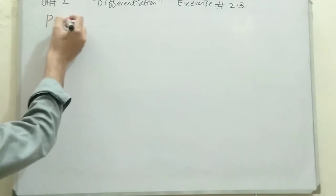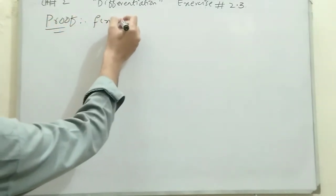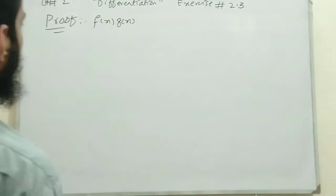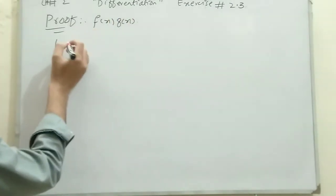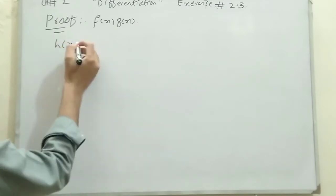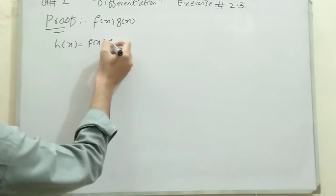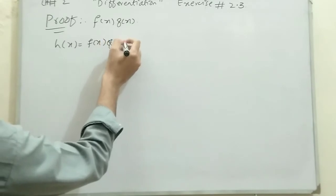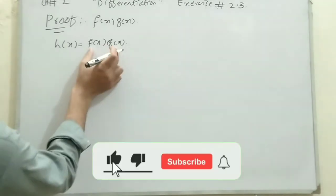Let's move toward the derivation for the product of two functions. Suppose we have two functions f(x) and g(x). Let these two functions multiply with each other, so we define h(x) = f(x) · g(x). We are going to derive the formula for the differentiation of the product of these two functions.